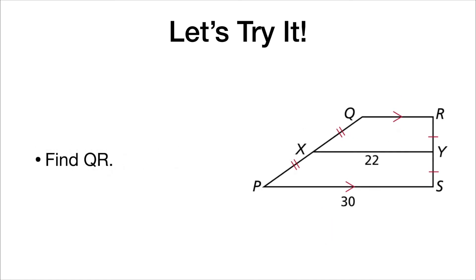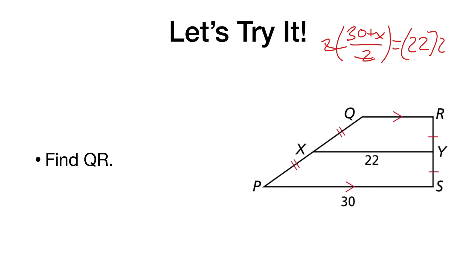Now we need to find QR using the trapezoid mid-segment theorem. We can tell this is a mid-segment because these two parts are congruent and the other two parts are congruent. So we set up (30 + X) / 2 = 22, multiply both sides by 2 to get 30 + X = 44, subtract 30 to find X = 14. As a check, the distance from each endpoint to the leg midpoints is 8, confirming it's the mid-segment.